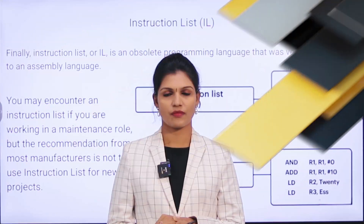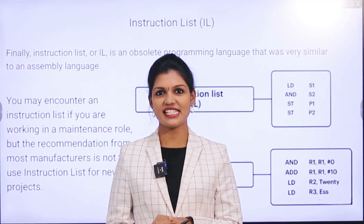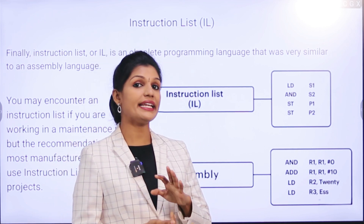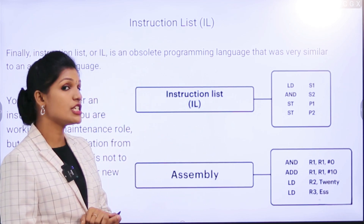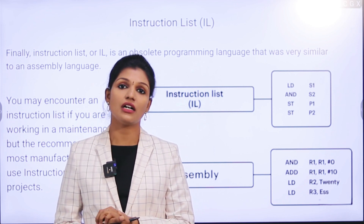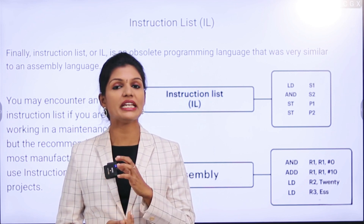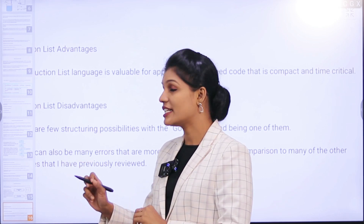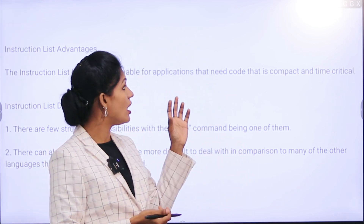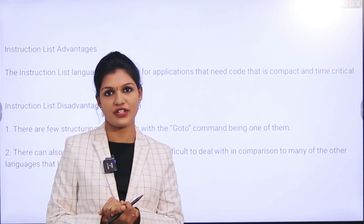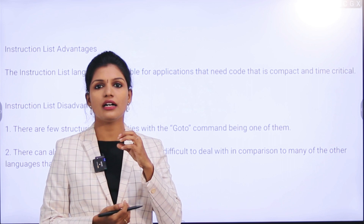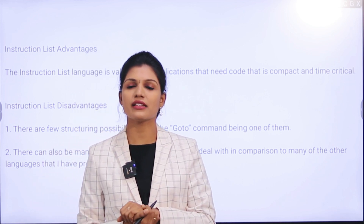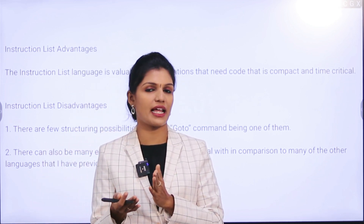The final PLC programming language is the Instruction List, or IL. It is a low-level programming language similar to assembly language, mainly used by maintenance personnel. Manufacturers do not recommend it for newer projects. Its main advantage is that it is valuable for applications requiring compact and time-critical code. The main disadvantage is that there are structural complications with commands like GOTO, and debugging errors is more difficult compared to the other programming languages.